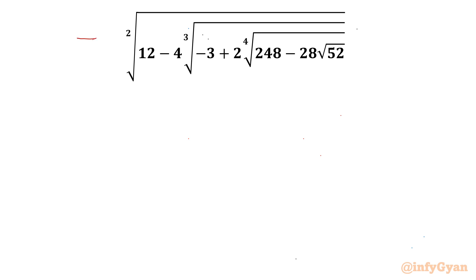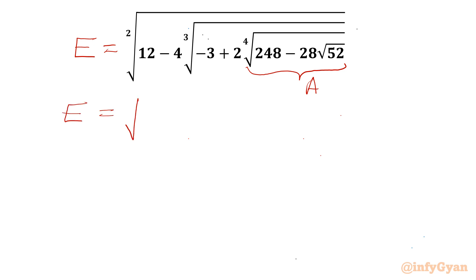I will consider this expression equal to E first, and I will call this fourth root equal to A. So our expression can be written as: square root of 12 minus 4 times cube root of negative 3 plus 2A.